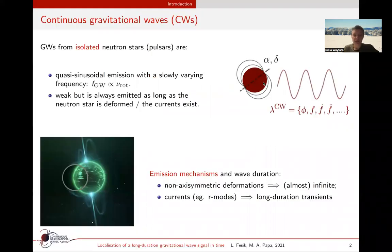An isolated spinning neutron star with non-axisymmetric deformations or currents will produce a long-duration gravitational wave, which we call the continuous gravitational wave. This wave is very weak but always emitted as long as the neutron star is deformed or the current exists. The wave is quasi-periodic with a slowly varying frequency as a function of the star's rotational frequency.